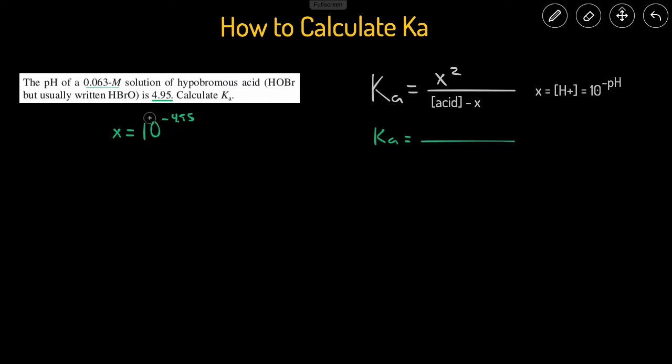So x squared, it'll just be this value, that value squared, and then divide it by the concentration of the acid, which is 0.063 minus our x value.